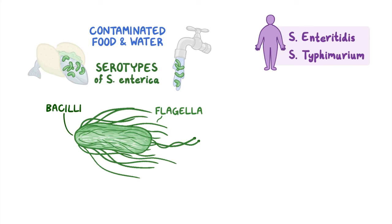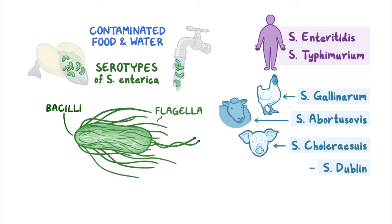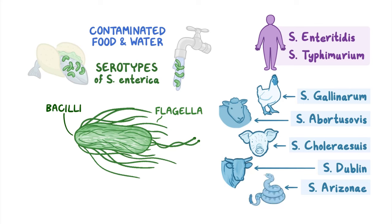Other serotypes of Salmonella enterica cause similar infections in other warm-blooded animals. These include S. gallinarum in poultry, S. abortusovus in sheep, S. cholerasuus in pigs, S. dublin in cattle, and S. arizoni in reptiles, among others. All of these strains can also infect humans.